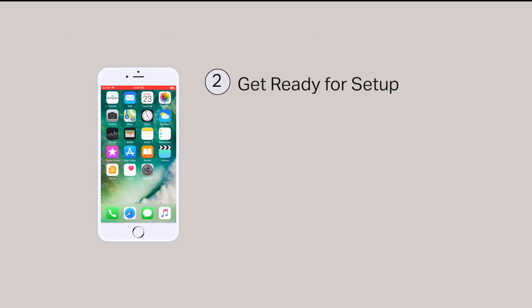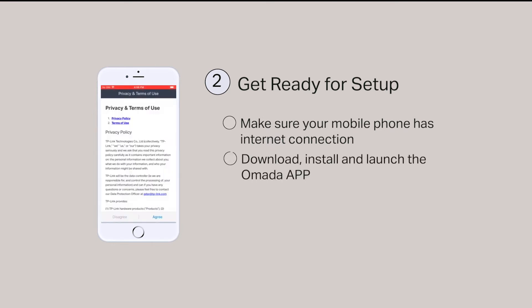Step 2: Getting ready for setup. Make sure your mobile phone has an internet connection and you've downloaded, installed, and launched the Omada app. You'll need to agree to TP-Link's privacy policy and terms of use before continuing.